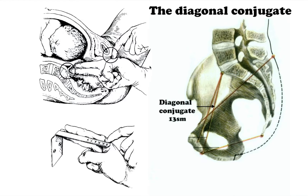The diagonal conjugate is measured by means of vaginal examination. The index and long fingers move along the whole of the sacrum to the promontory. The tip of the long finger is fixed on the promontory apex, and the edge of the palm rests against the inferior margin of the symphysis. The place where the doctor's hand touches the inferior margin of the symphysis is marked with the finger of the other hand.